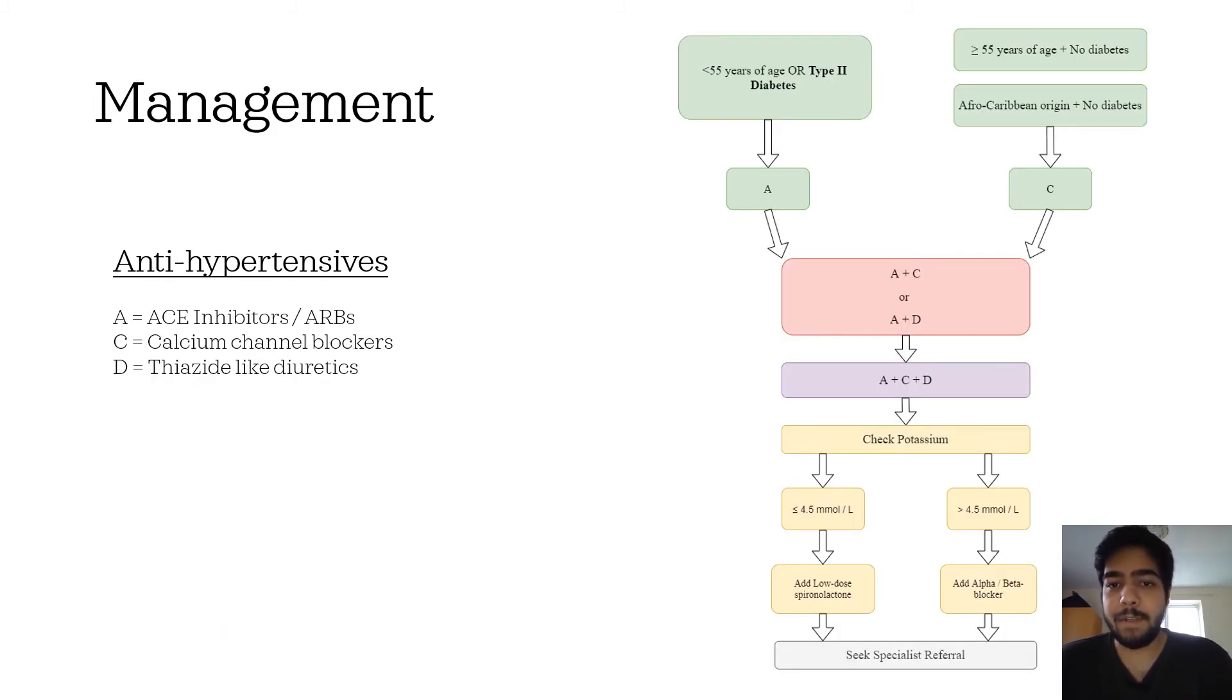This chart is absolutely essential. As you can look in this chart, if a patient is less than 55 years of age or has type 2 diabetes, you will go for ACE inhibitors or ARBs as the first-line treatment. If the patient is more than or equal to 55 years of age with no diabetes, or if the patient is of Afro-Caribbean origin with no diabetes, then you will go for a calcium channel blocker, which is the first-line treatment for such patients.